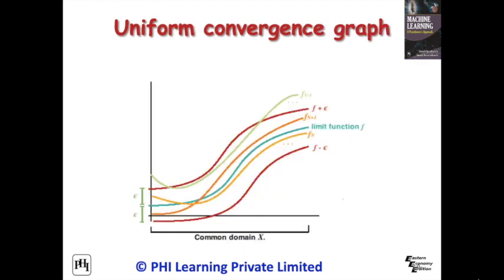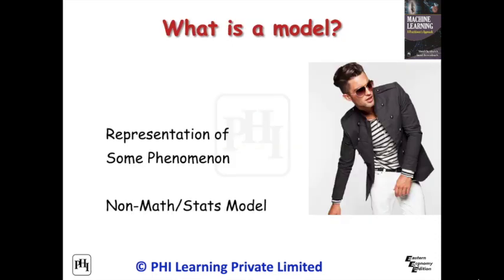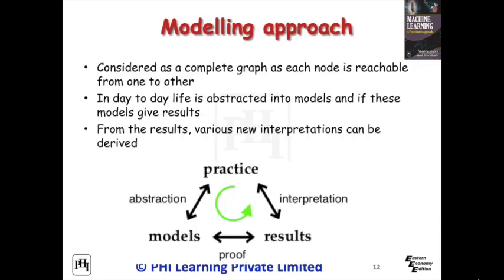Another somewhat stronger type of convergence of a sequence of functions is called uniform convergence. The figure illustrates the concept of uniform convergence of a sequence of functions. What is a model? There are non-mathematical and statistical models. The figure shows the modeling approach, which can be considered as a complete graph where each node is reachable from the other. The practices we normally follow in day-to-day life are abstracted into models, and if these models give results, then an expected outcome is obtained.